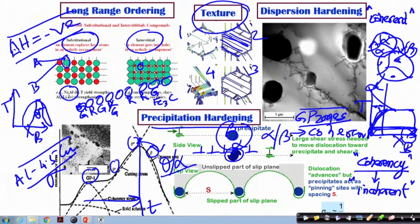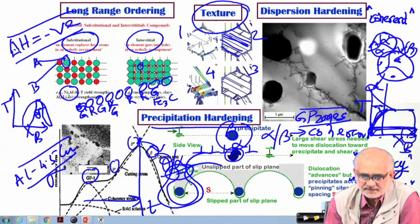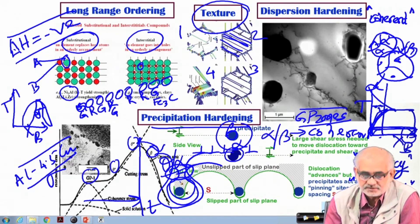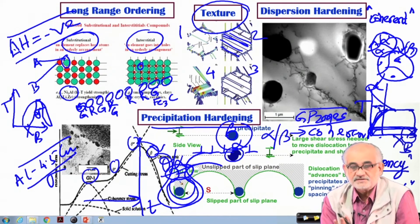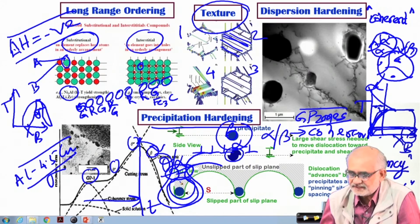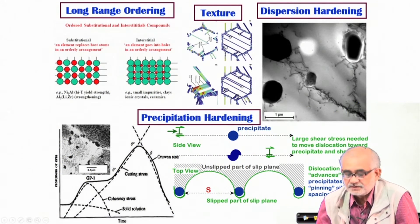Once precipitates become incoherent, you enter the Orowan strengthening regime, which also offers impediment to dislocation movement. Here, the obstruction is of a different type: dislocations tend to bow around the incoherent precipitate. Eventually there are possibilities of annihilation, leaving behind a dislocation loop, which further provides hindrance to dislocation movement. This, in a nutshell, covers the various possibilities of strengthening mechanisms in alloys.